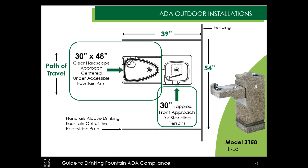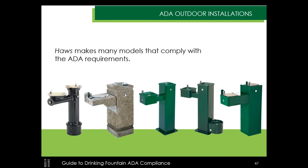With wing walls or guard rails in place, all requirements remain the same, still favoring a forward approach as the easiest. Unfortunately, many installations prioritize the high side, unintentionally making the low side difficult to access. The guard rails need to extend at least far enough so that no part of the fountain protrudes outside the reach of the rails — to keep the unit easily detectable and out of the path of travel.